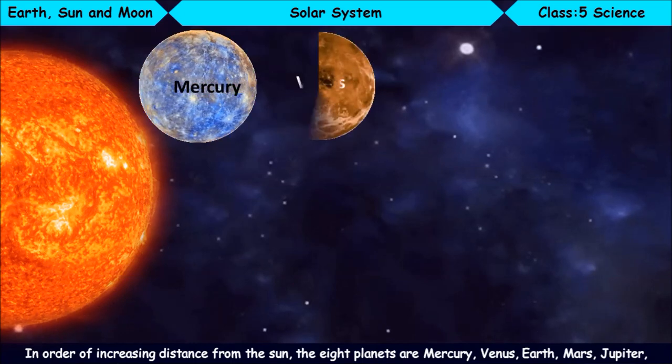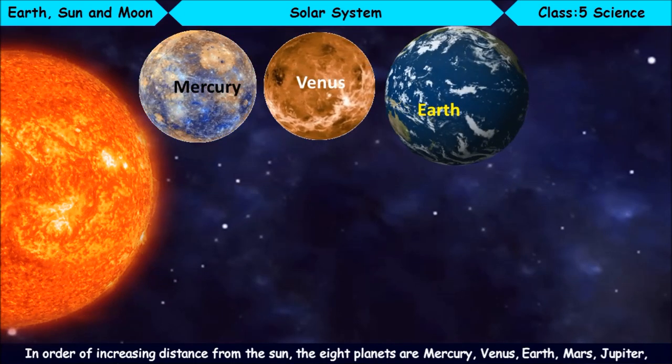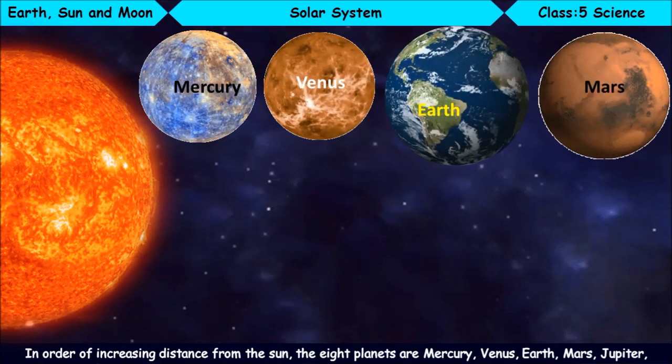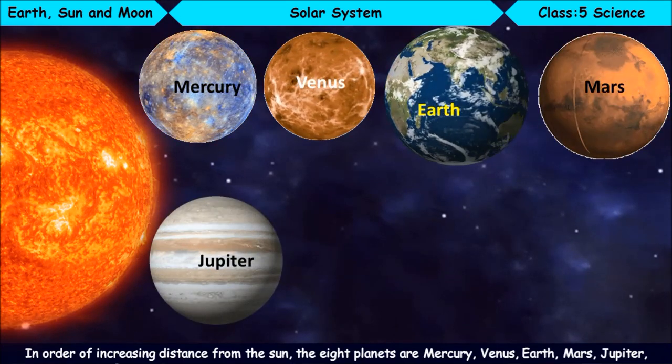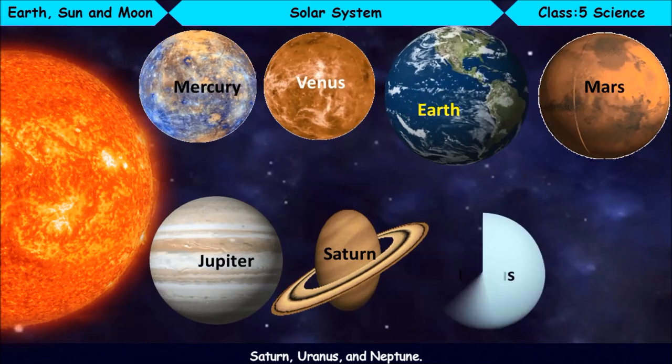the eight planets are Mercury, Venus, Earth, Mars, Jupiter, Saturn, Uranus, and Neptune.